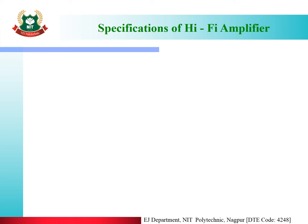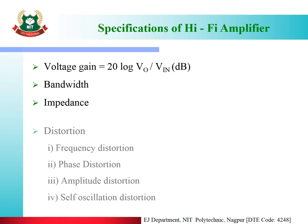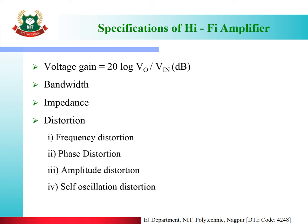Now the specifications of the hi-fi amplifier. The voltage gain is 20 log(Vo/Vin) dB. Then bandwidth, then impedance, then distortion. Under distortion there are four types: frequency distortion, phasor distortion, amplitude distortion, and self-oscillation distortion. These are the specifications of the hi-fi amplifier.